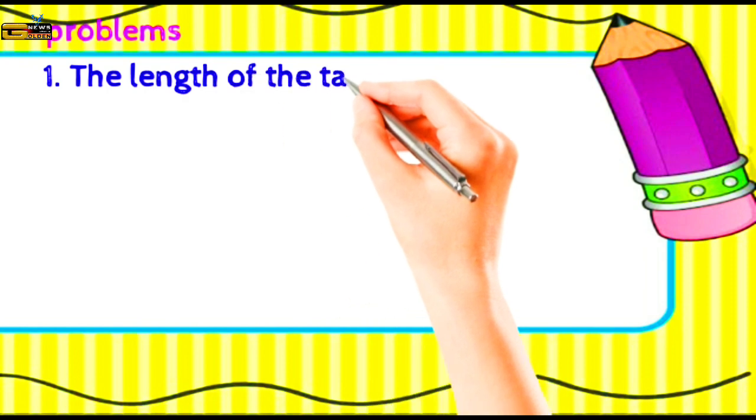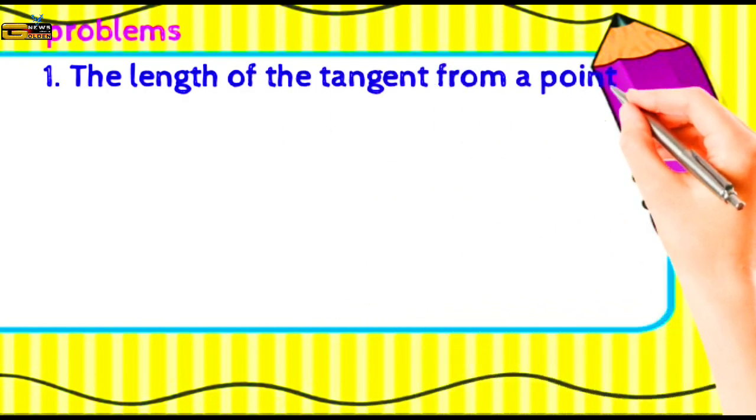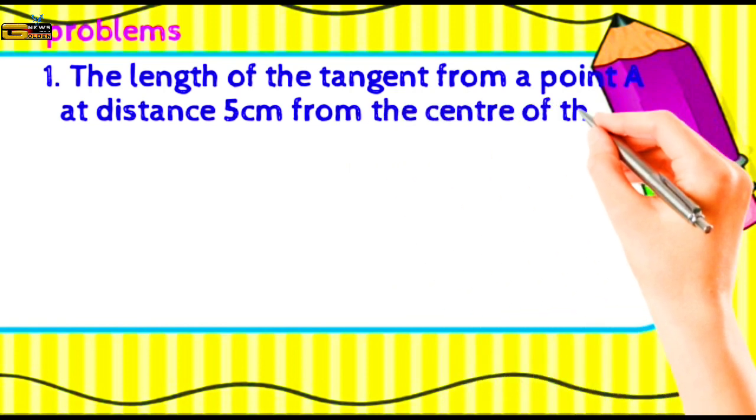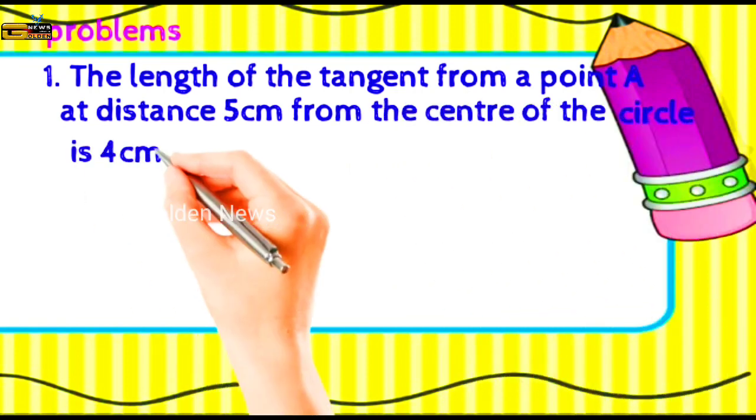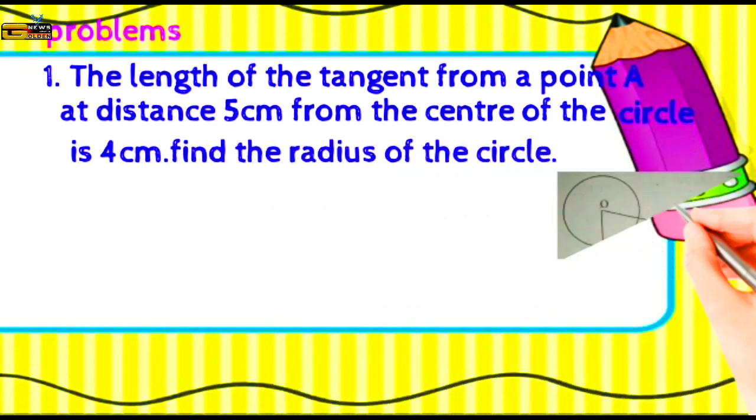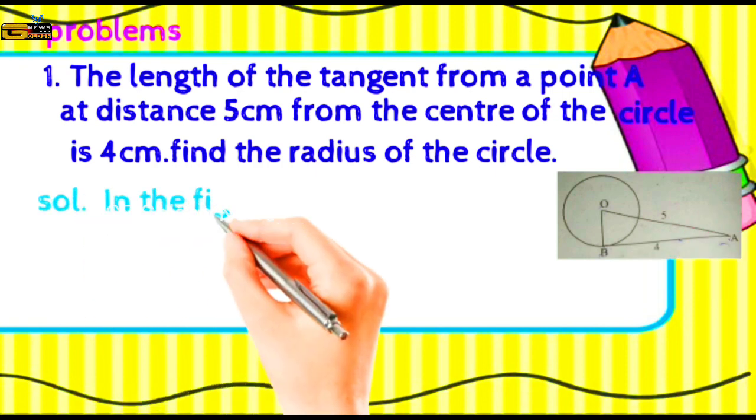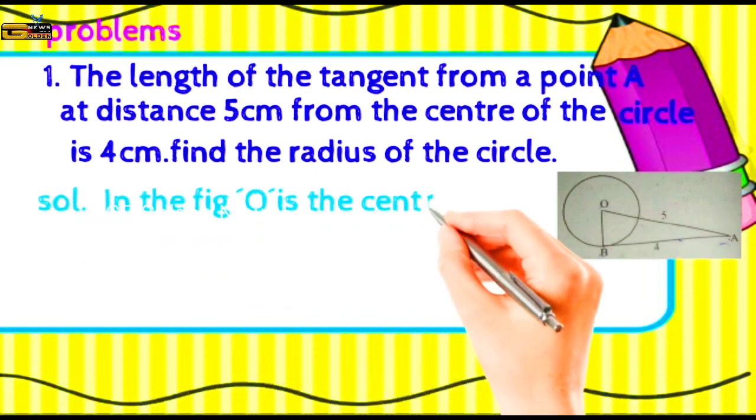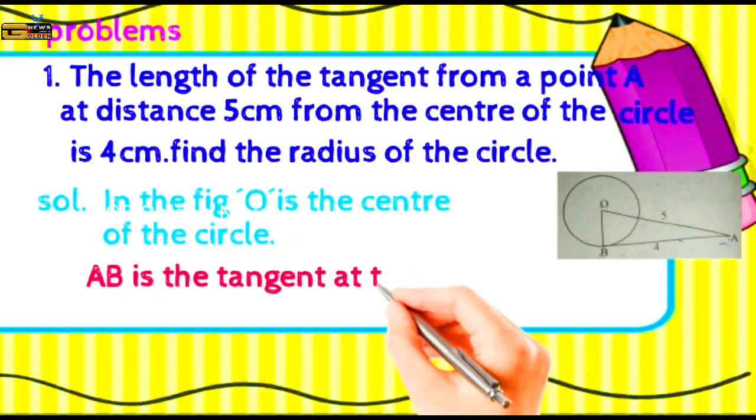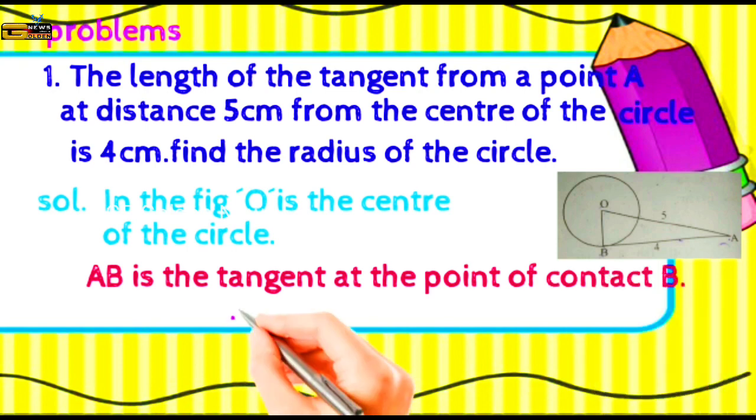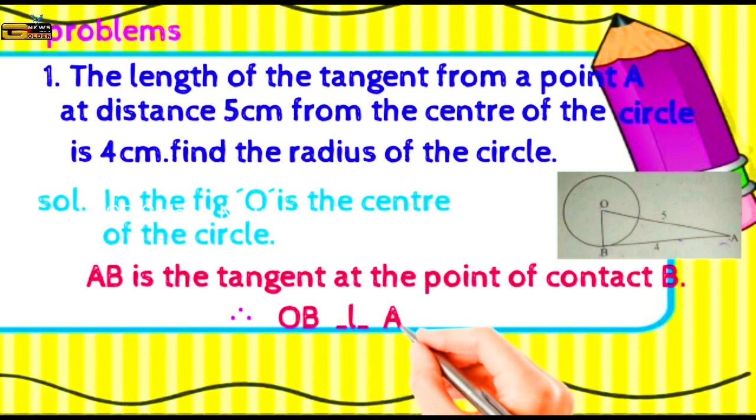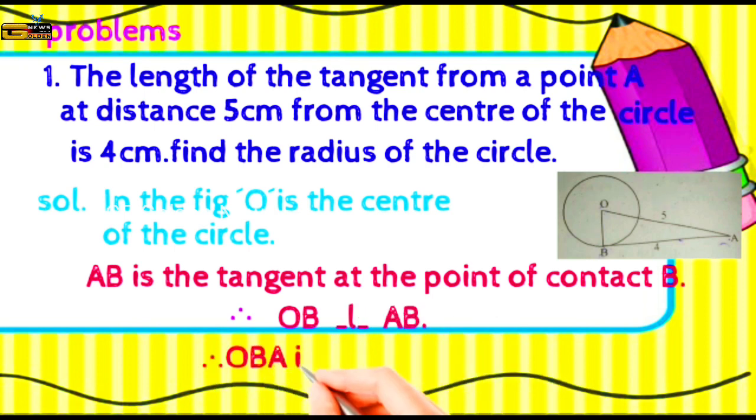Problem: The lengths of the tangents from a point A at a distance 5 cm from the center of the circle is 4 cm. Find the radius of the circle. Solution: In the figure, O is the center of the circle. AB is the tangent at the point of contact B. Therefore, OB is perpendicular to AB. OBA is a right triangle.